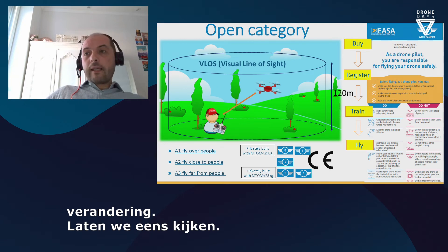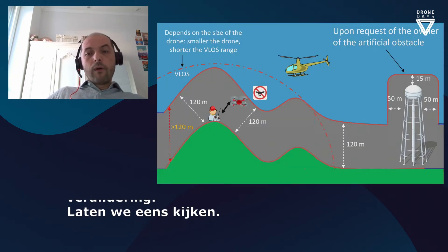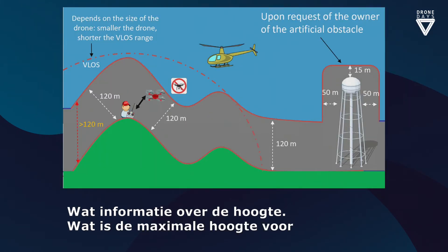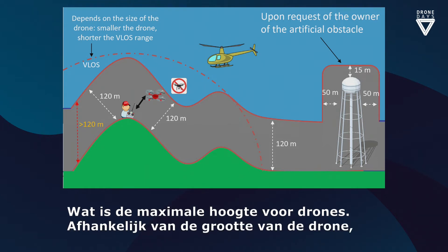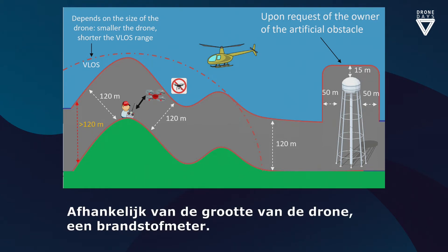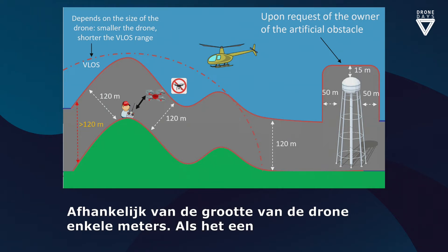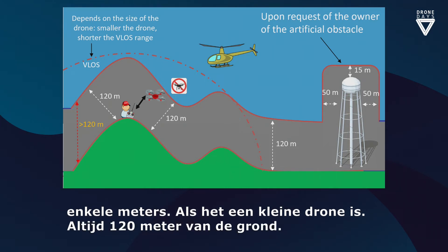Some information about height: what is the maximum height for drones? You don't always have your drone in visual sight, and depending on the size of the drone, visual sight may mean a few meters if the drone is very small, or quite a large distance if the drone is big. In terms of height, you always need to keep within 120 meters from the surface of the ground.